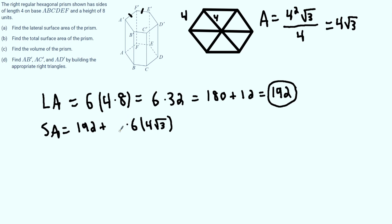However, there are also two hexagons. So we have to multiply that by 2. So that equals 192 plus, well 6 times 4 is 24. 24 times 2 is 48. And we're just going to keep that square root of 3. And this would be our surface area.